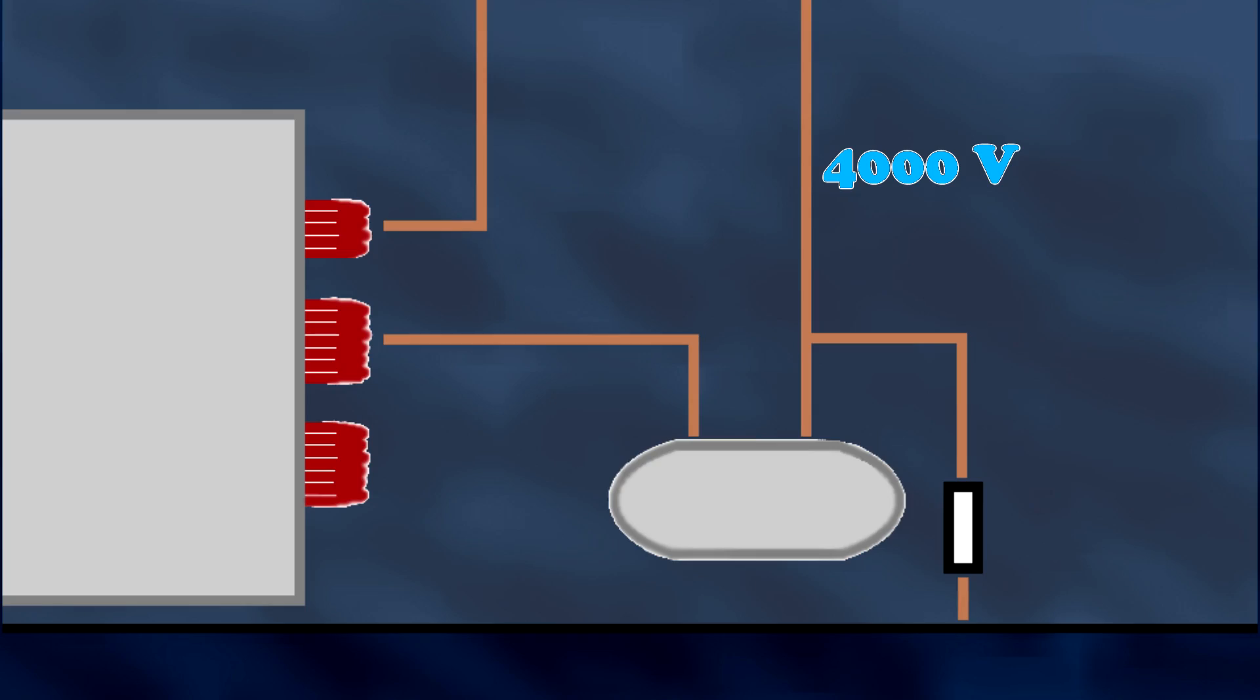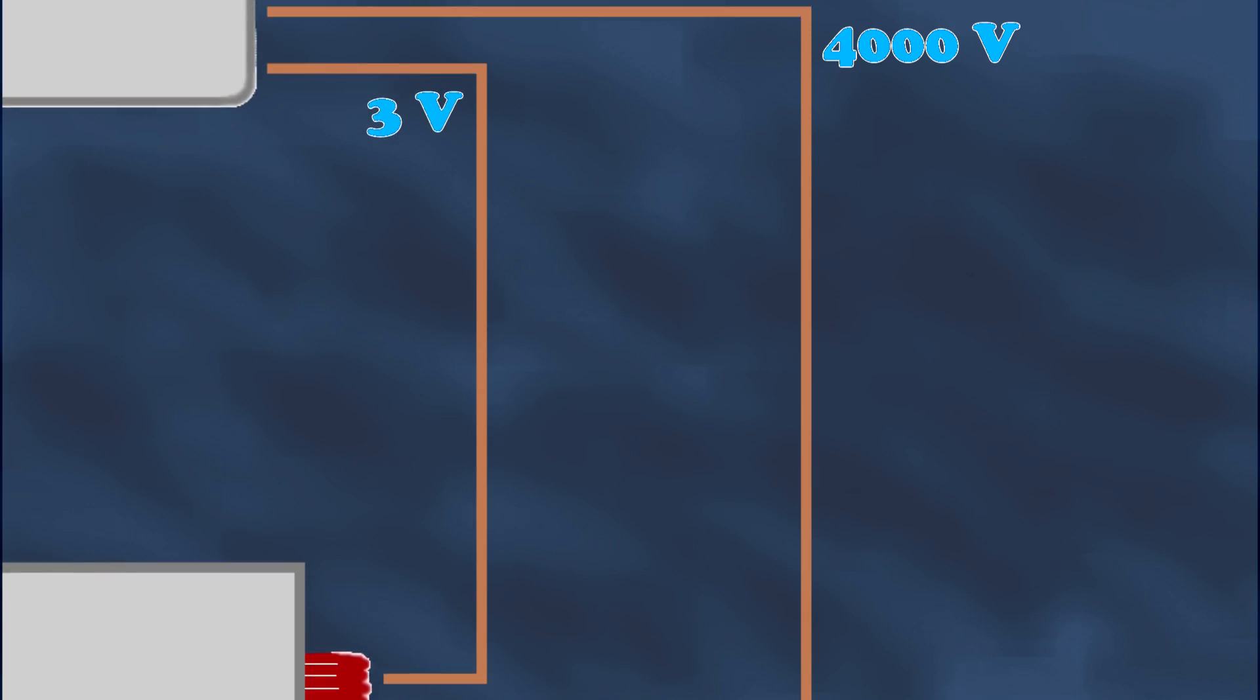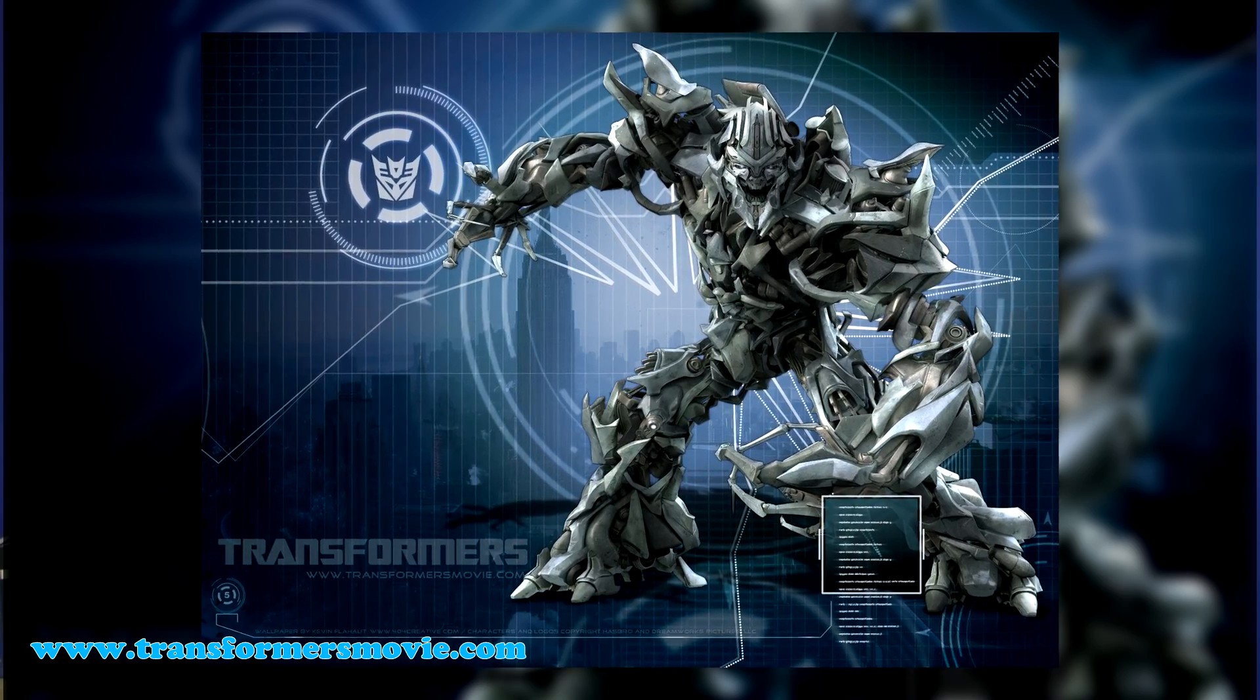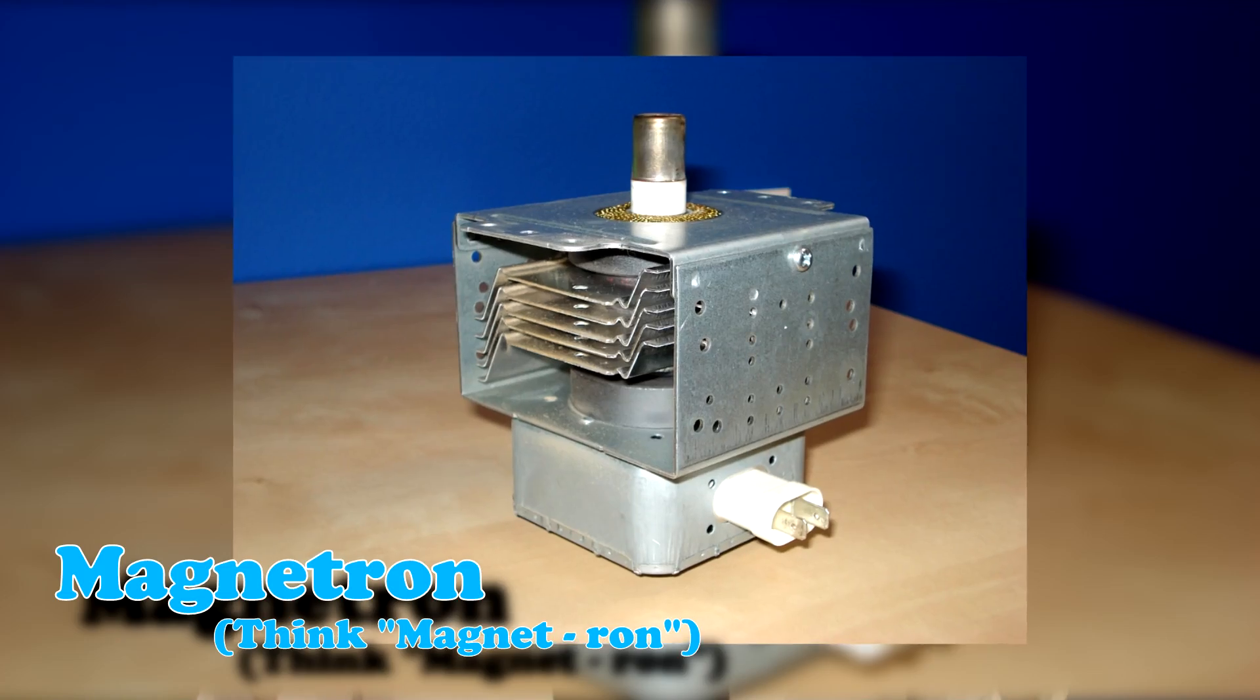Now that we have a 4,000 volt line and a 3 volt line, we can move forward. Both of these are carried to the same device. The magnetron. No, no, magnetron, not megatron. There, that's better.